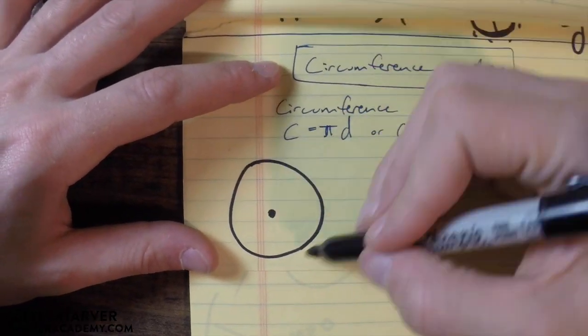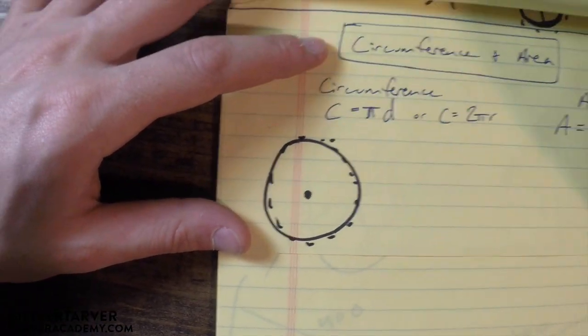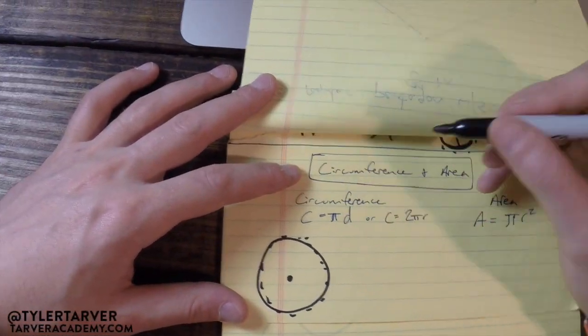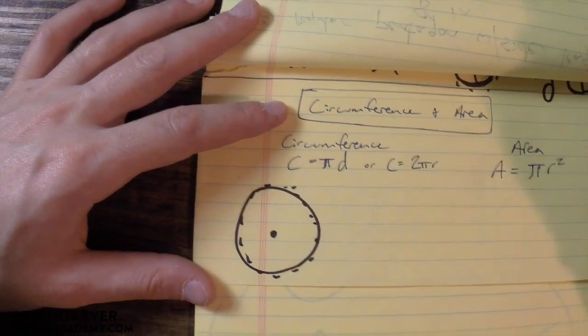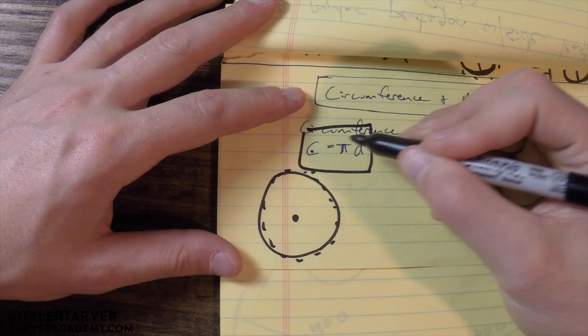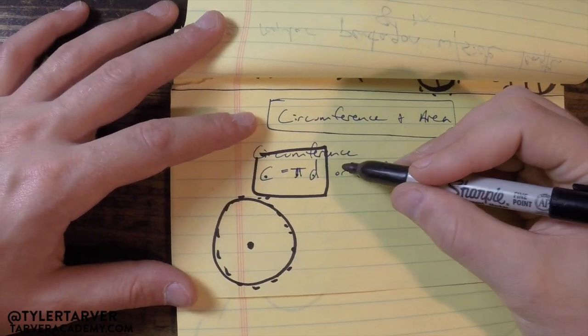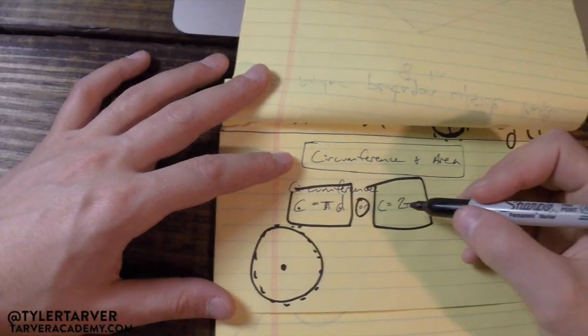So you got your circle, your circumference is this part right here, it's the distance all the way around it. If we ever want to find the circumference of a circle, we have two formulas: circumference equals pi times diameter, or circumference equals 2 pi r.